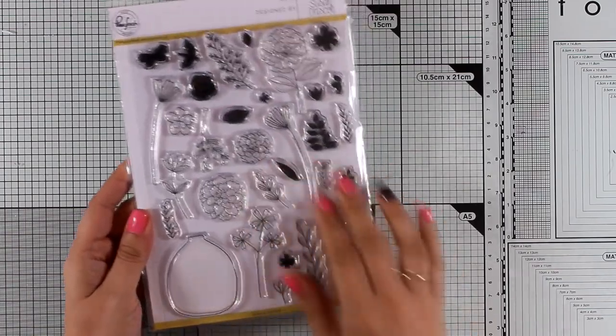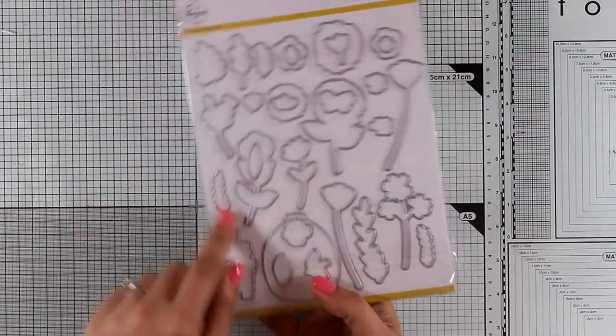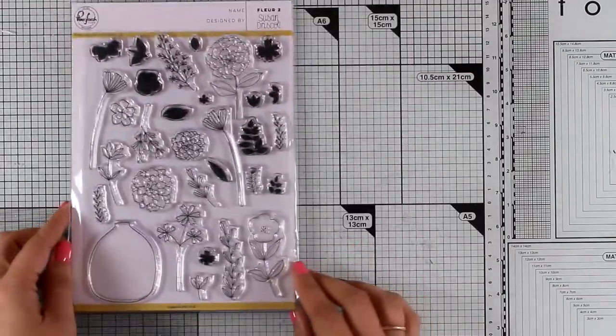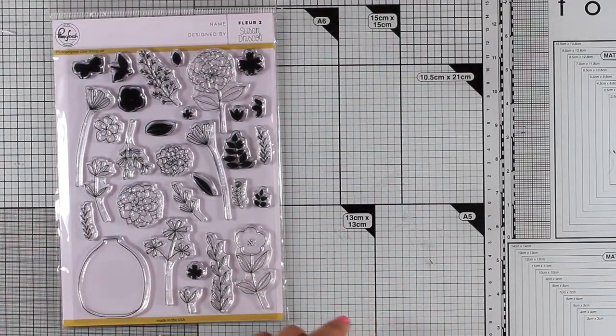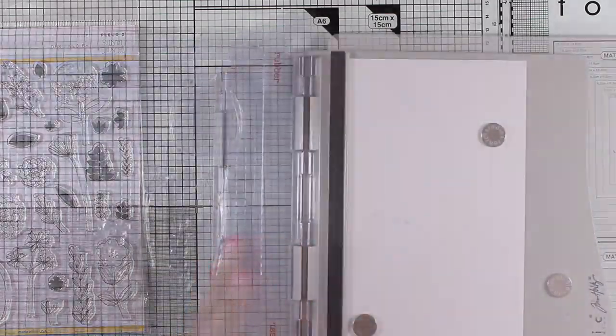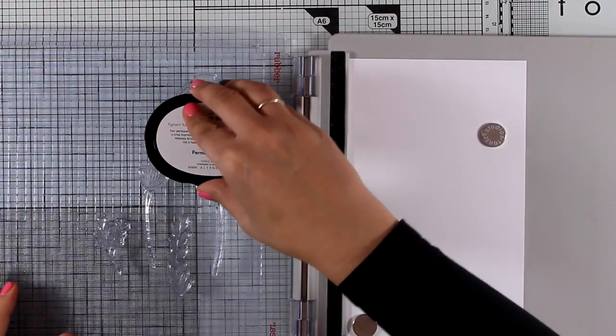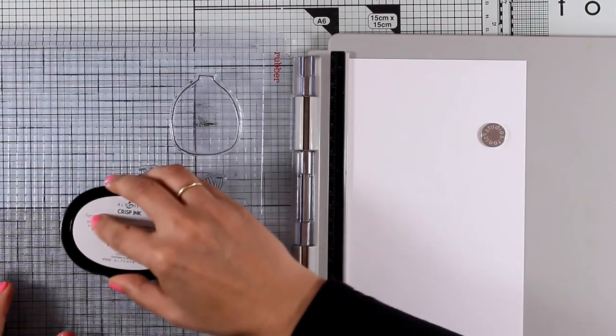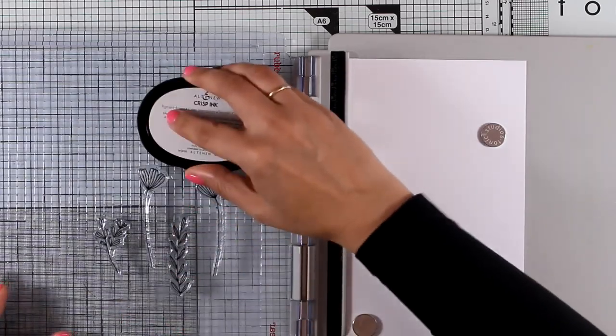That's why I'll be using this wonderful stamp set called Flare 2. It comes with a bunch of flowers and leaves as well as a vase, and there are also matching dies. I'm going to stamp a few of the flowers that I picked from the stamp set along with the vase. I'm stamping them with black ink.